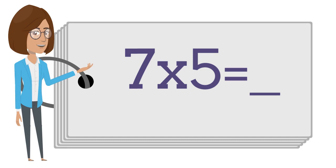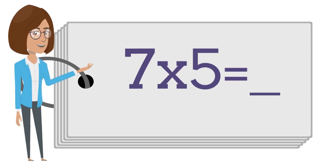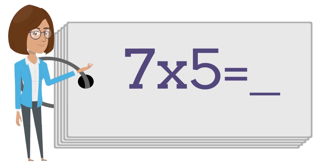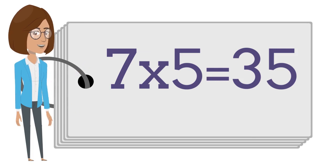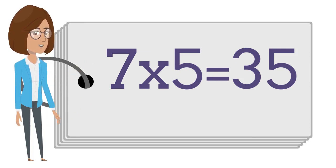7 times 5 is — say the answer out loud. 7 times 5 is 35.